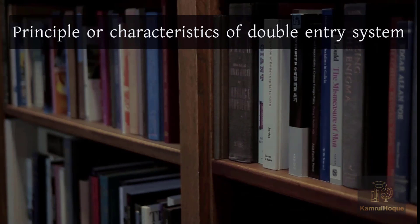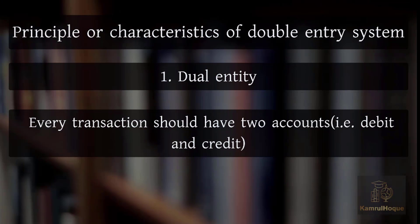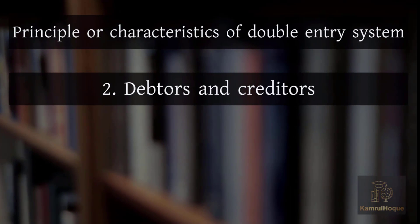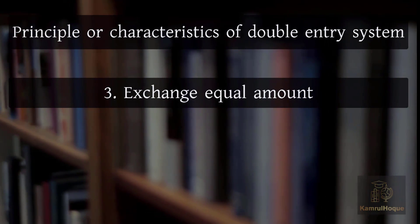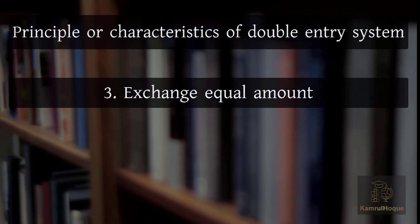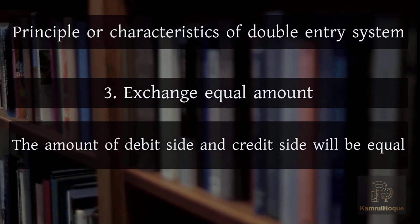Principles or Characteristics of the Double Entry System: First, Dual Entry — every transaction should have two accounts, a debit and a credit. Second, Debtors and Creditors — the benefit receiver is the debtor and the benefit provider is the creditor. Third, Equal Amount — the amount on the debit side and the credit side will always be equal.